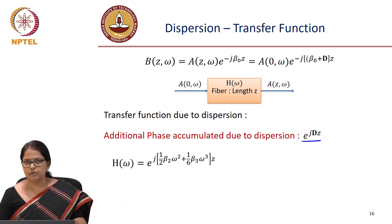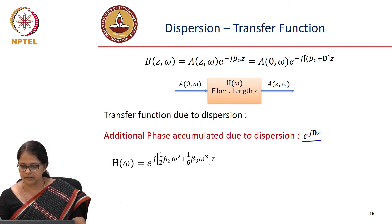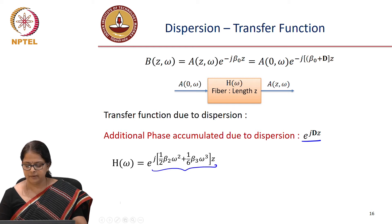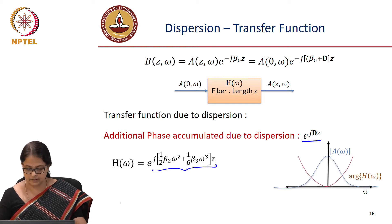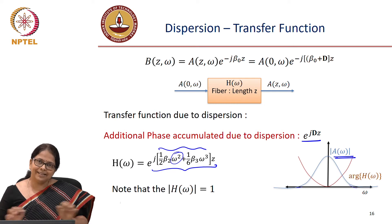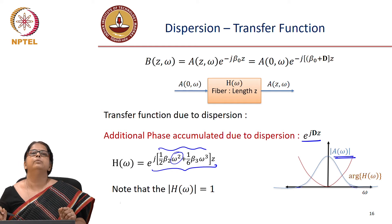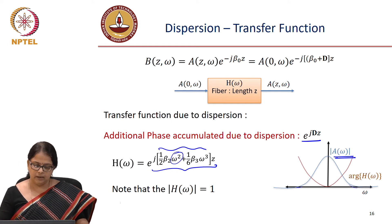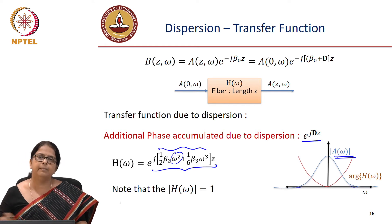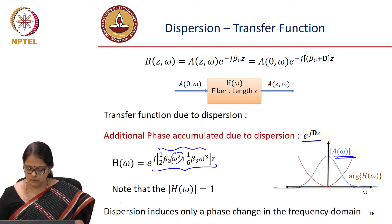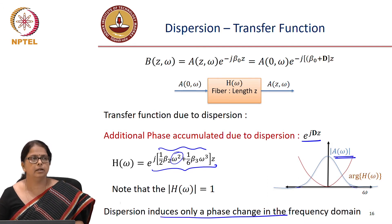We can now write the transfer function: since the output equals the input times this factor, H of omega is equal to e to the power j D z. That represents the transfer function of the system. In conclusion, dispersion can be represented as a frequency domain transfer function H of j omega which has only a phase response — the amplitude response of the transfer function is 1. So dispersion introduces only a phase change in the frequency domain.